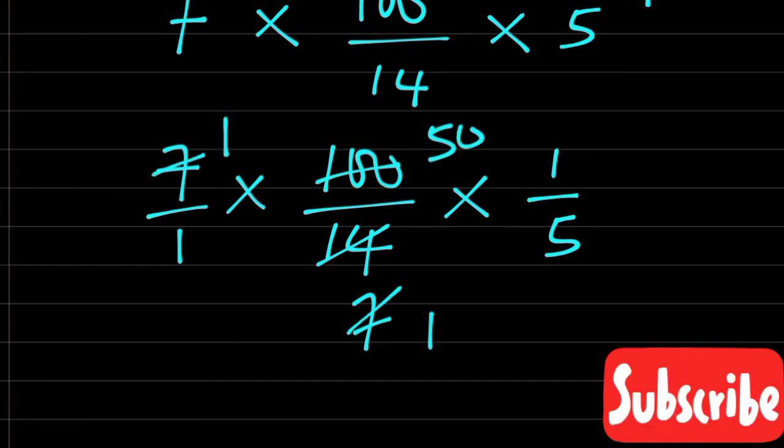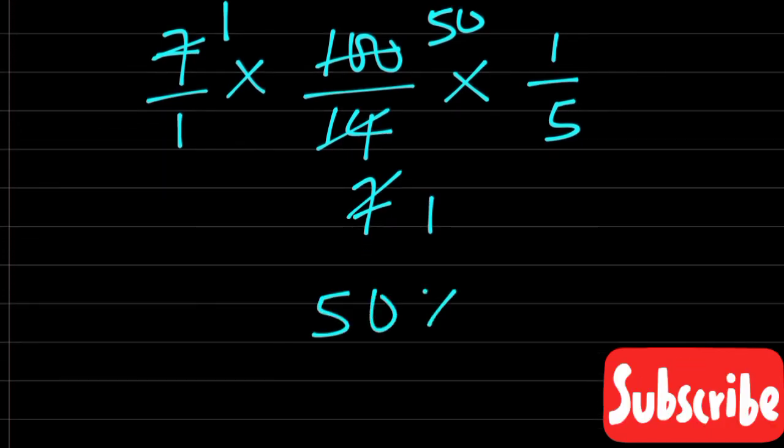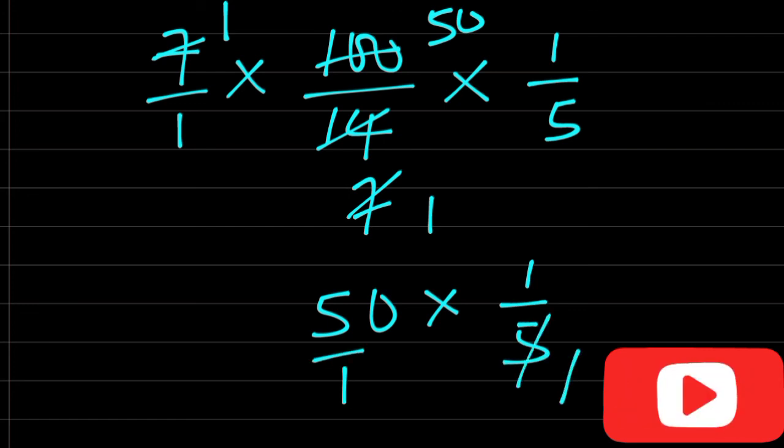7 goes in 7, 1. 7 goes in 7, 1. 7 goes here 10. So we are left with 50 times 1 over 5. 5 goes here 1, 5 goes here 10.